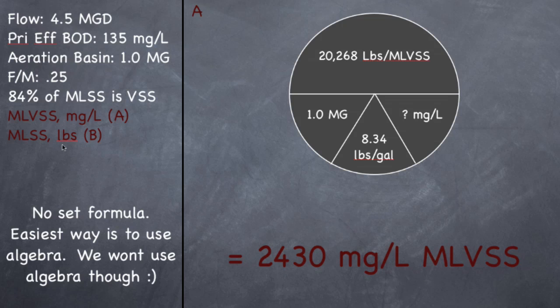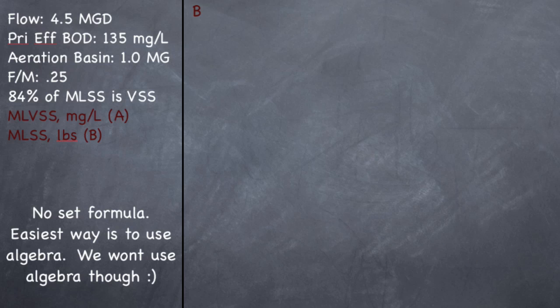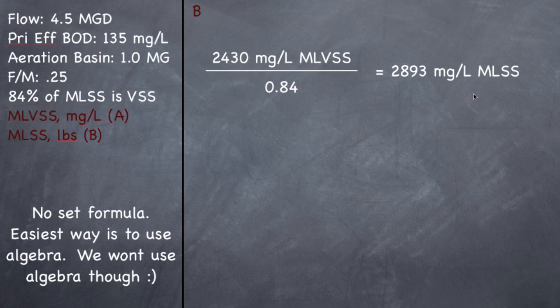Okay, so we figured out the concentration of the MLVSS. Part B, they want to know the pounds of the MLSS. So what we want to do is we want to take the MLVSS and divide it by 0.84, because 84% of the MLSS is VSS. So if I had the MLSS, I would multiply it by 0.84 and it would give me the MLVSS. But I don't, I have the MLVSS. So I need to divide it by 0.84 and it's going to give me the MLSS.